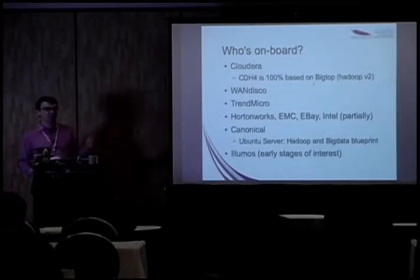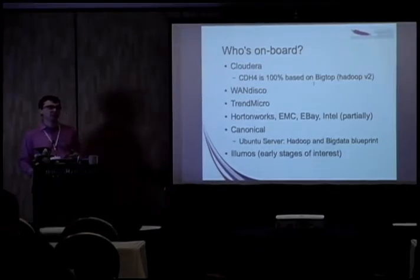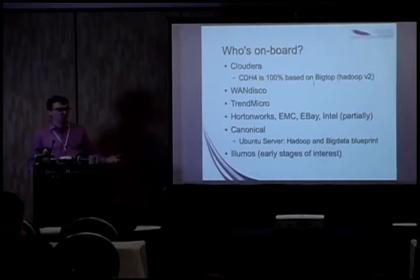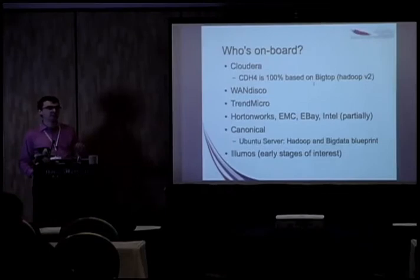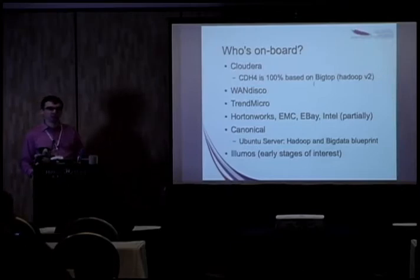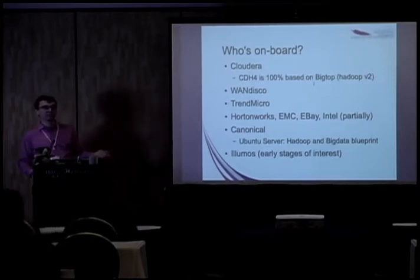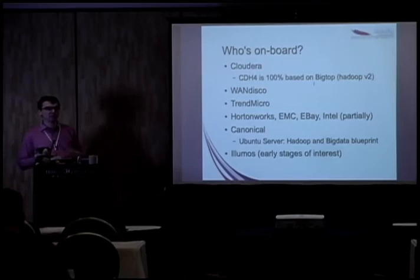Because we have all these organizations now building on top of BigTop — Cloudera's CDH4 is 100% based on BigTop, Windisco is 100% based on BigTop, Trend Micro has a proprietary distribution that's based on BigTop, Hortonworks, EMC, eBay, and Intel are partially based on BigTop — BigTop kind of represents that common ground. Canonical is integrating BigTop packaging into their own distribution through their deployment automation software called Juju. It's slowly turning into a Debian, so it's a pretty safe bet as far as I'm concerned, but of course the choice is yours.